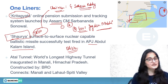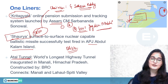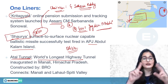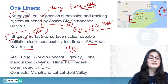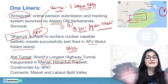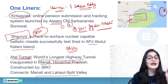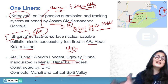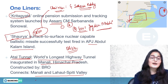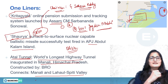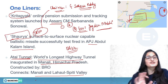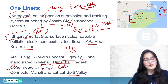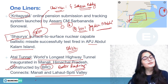The Atal Tunnel has been inaugurated by Prime Minister Modi and is the world's longest highway tunnel. It was inaugurated at Manali in Himachal Pradesh. It connects Manali and the Lahaul-Spiti Valley, acting as an all-season route when Rohtang Pass is closed due to snowfall for about 6 months. It has been constructed by BRO — the Border Roads Organization.